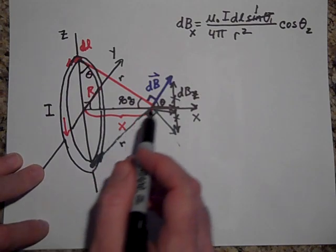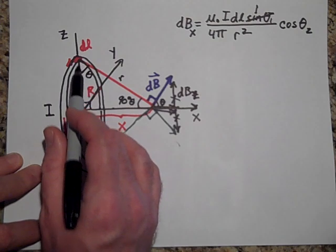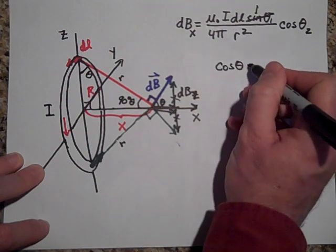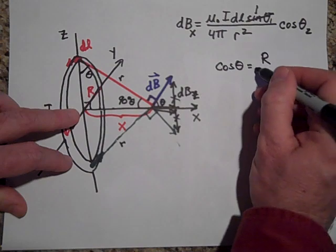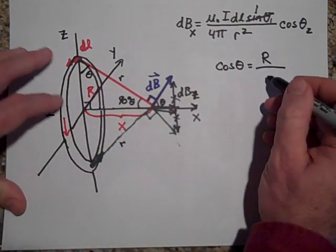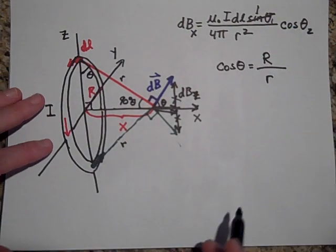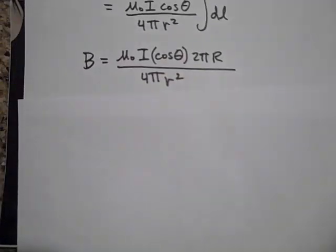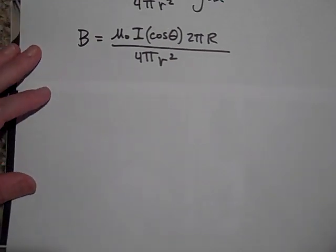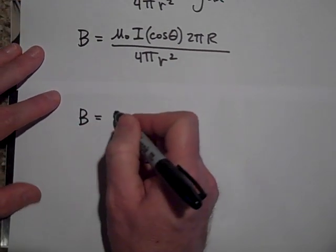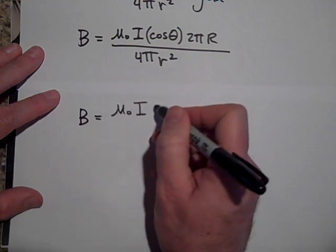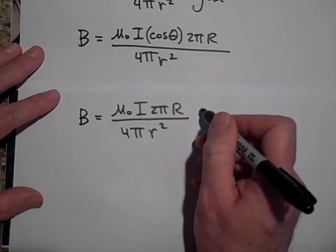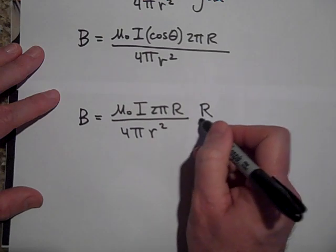And so we can say that the cosine of theta, if I want to substitute in, the cosine of theta is the adjacent side divided by the hypotenuse. So the cosine of theta, that would be capital R, divided by the hypotenuse, little r. So I'm going to put that in for that. So as it turns out, that B, B, almost done here, B is going to equal mu naught I 2 pi R over 4 pi r squared. And the cosine of theta, we said, was capital R over little r.